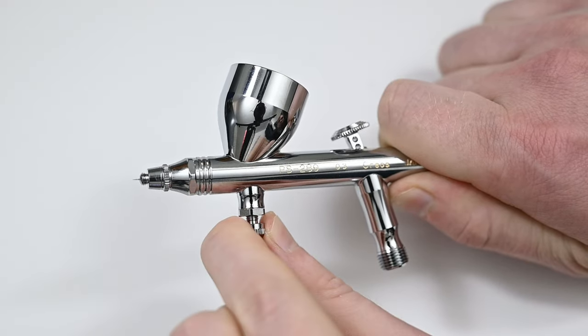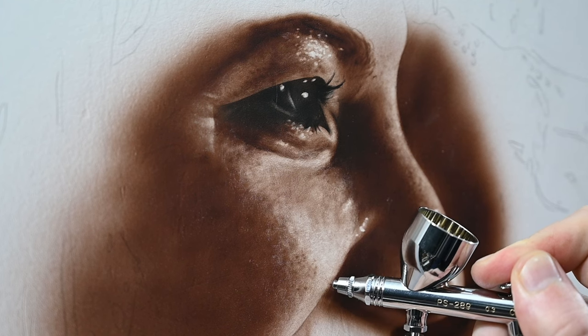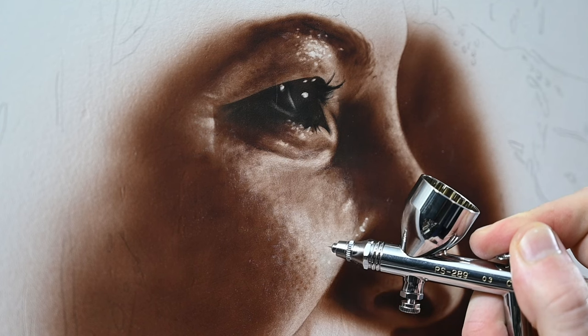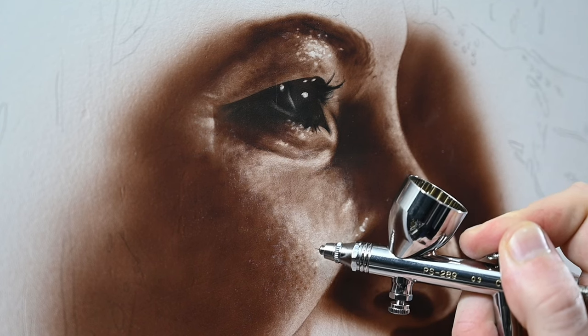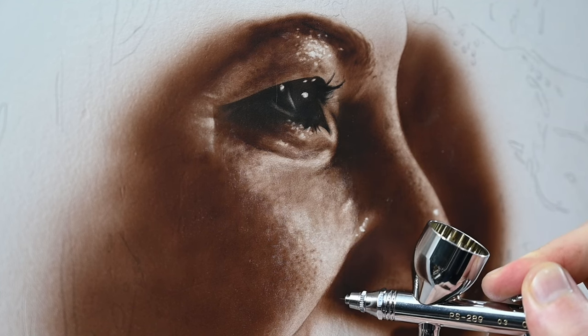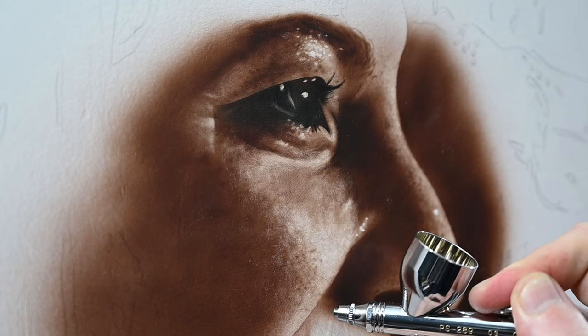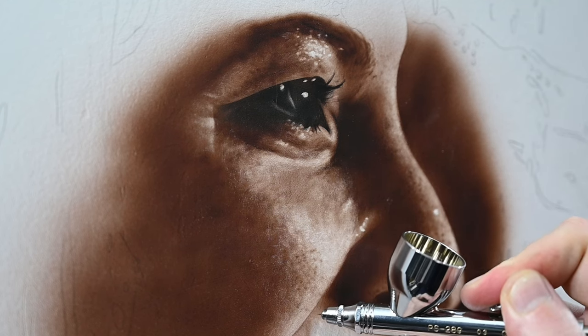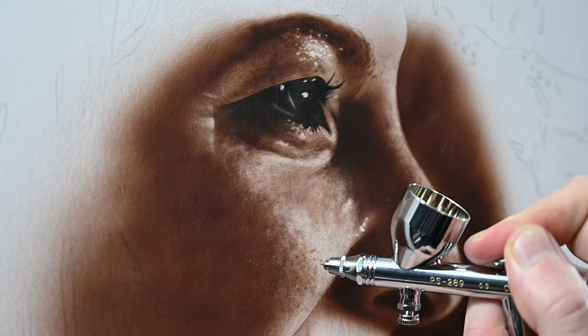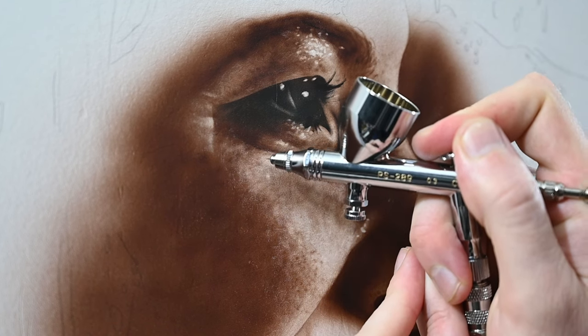And finally, let's move along to the subjective part of this review where I switched over to the PS 289 just to work on this painting for a little bit and give you my opinions. I'm in the very early stages of this painting and there's a lot going on in it. So what I'm doing here is just adding some subtle texture into the skin, some small shadows for skin texture. And the airbrush is spraying very well. I find it very comfortable. That trigger control is excellent. I'm trying to spray a bunch of small dots here. So it's important that when I pull back, I get a small amount of paint.